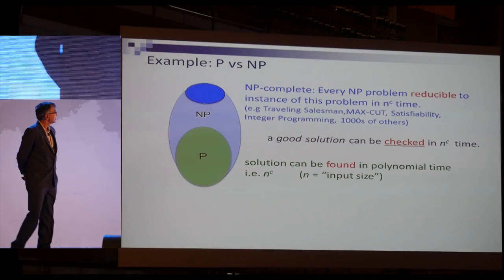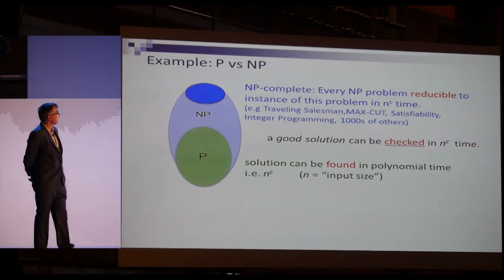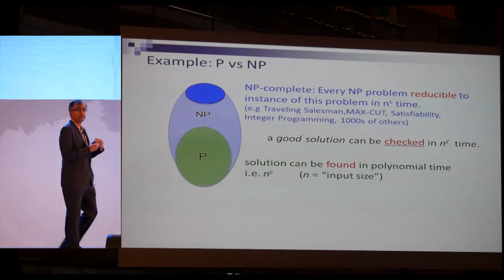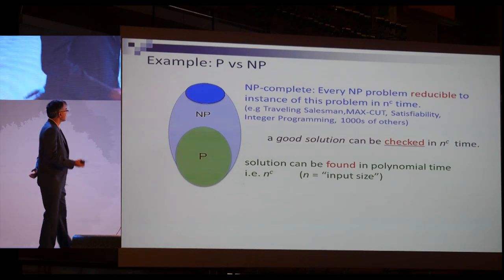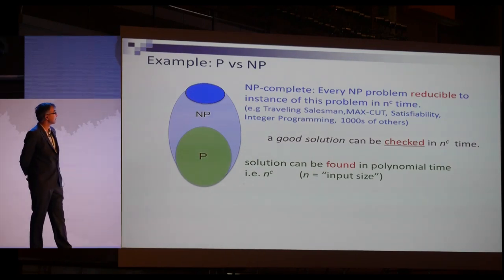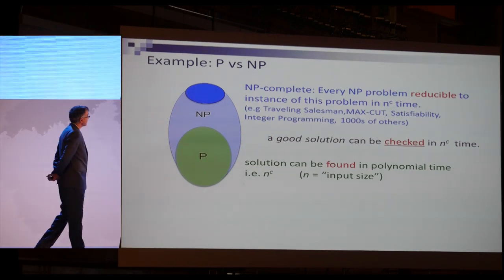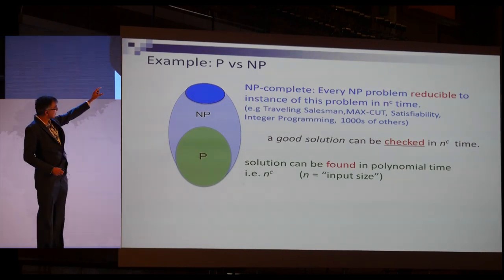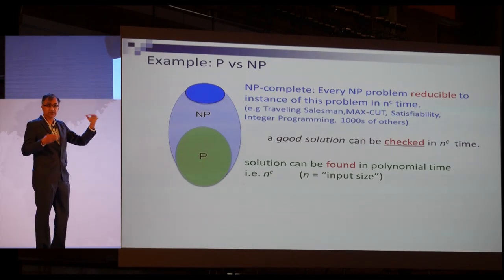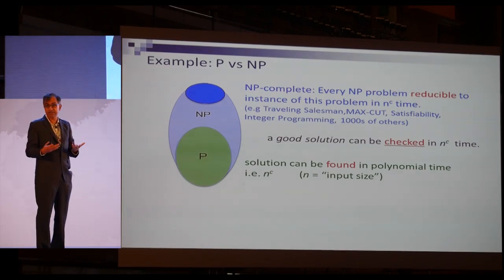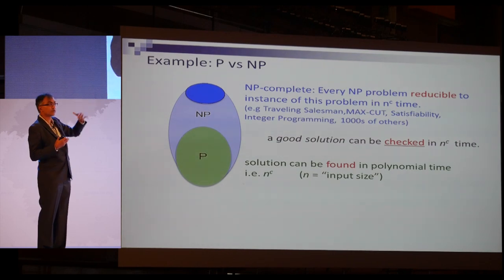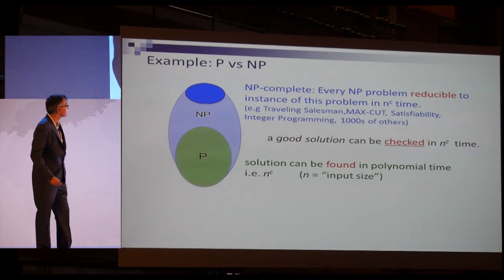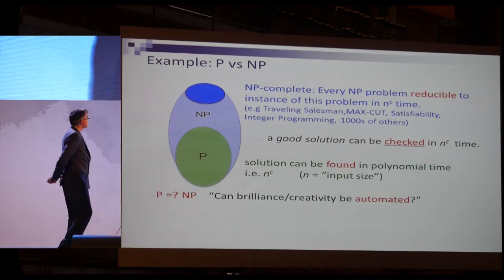NP-complete is a set of problems where every NP problem reduces to an instance of this problem in polynomial time. There are thousands of such problems known — famous ones include traveling salesman, max cut, Boolean satisfiability, and integer programming. One consequence is that NP-complete problems reduce to each other, which is surprising: if you can solve one, you can solve the other.